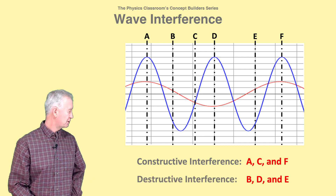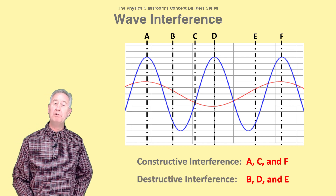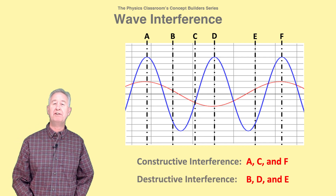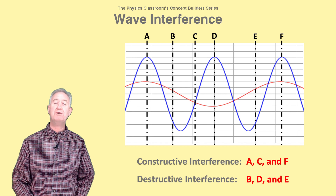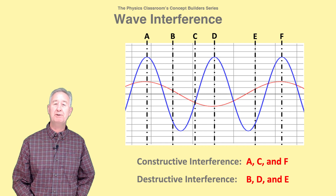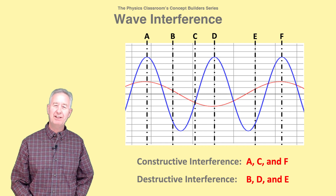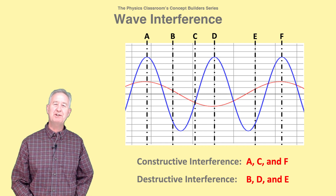And points B, D, and E represent destructive interference since the two waves are displacing the medium in opposite directions at these three locations.